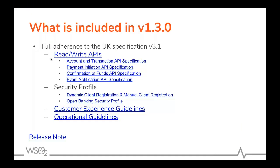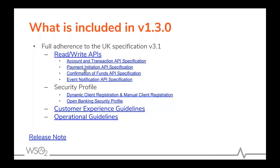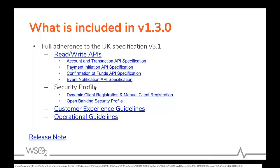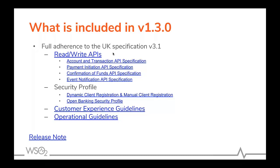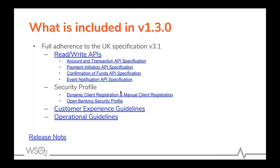OBIE has published several documents. One is the Read-Write APIs, which covers the account and transaction API — what kind of information a bank needs to expose to TPPs, how payments should be handled, how to check confirmation of funds, and how to send event notifications to TPPs. They also have a set of documents for the security profile, which explains how the bank should secure the APIs and how TPPs should be registered. In coming webinars, we will discuss these APIs and security profile information in more detail.